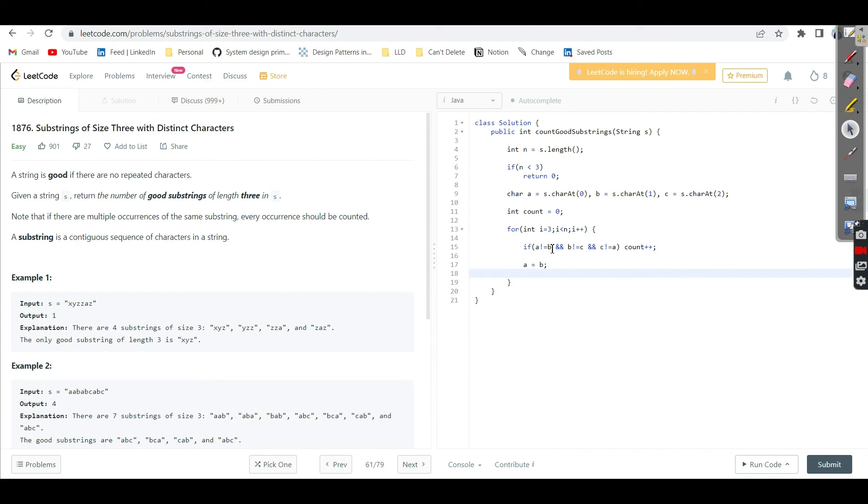Otherwise, a is going to be b, b is going to be c, and c is going to be s.charAt(i). After completing this, you are still going to be left with a, b, c. You need to compare it last also. Then just take this condition here. Then simply return count.